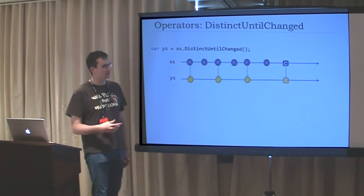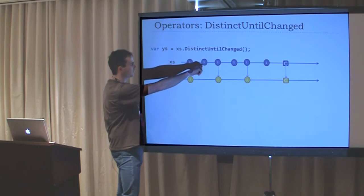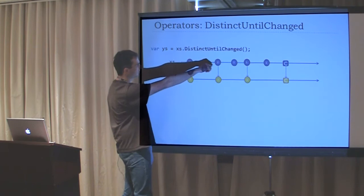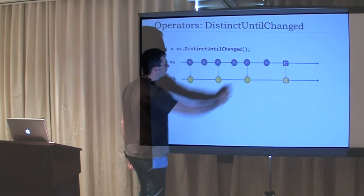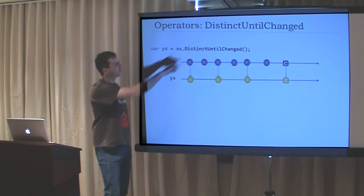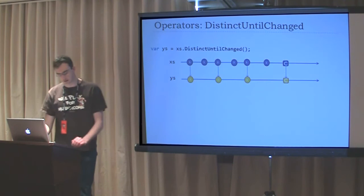Distinct-until-changed produces values through, but if it has that value in its cache currently, it doesn't send it through. The second value didn't get projected. Then a new different value came in and gets sent through. On-completed gets sent through directly. You can pass in a comparer function for more complex comparisons than just equality.